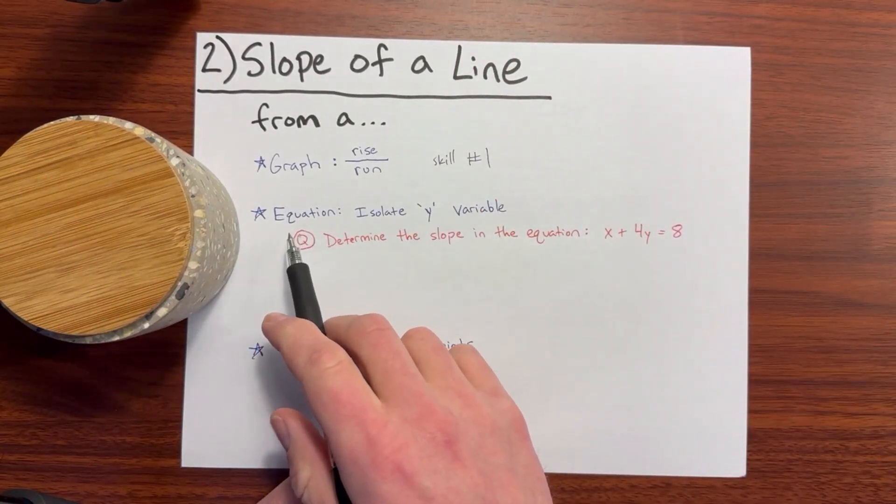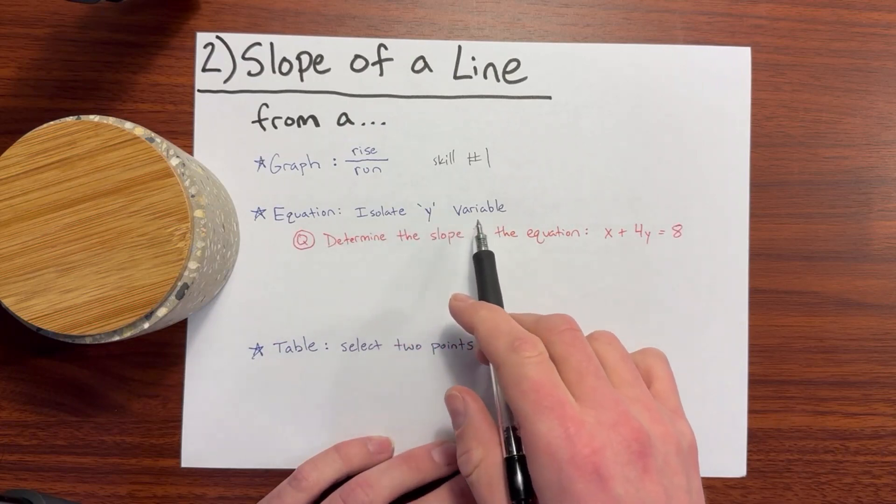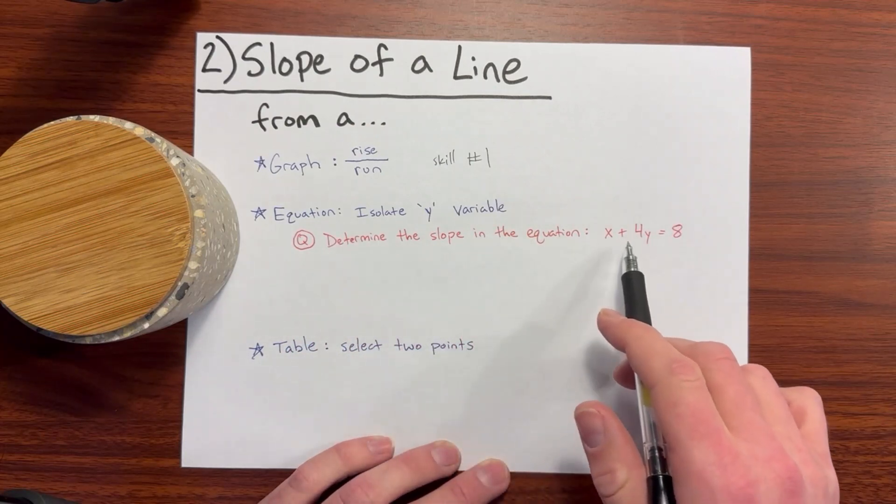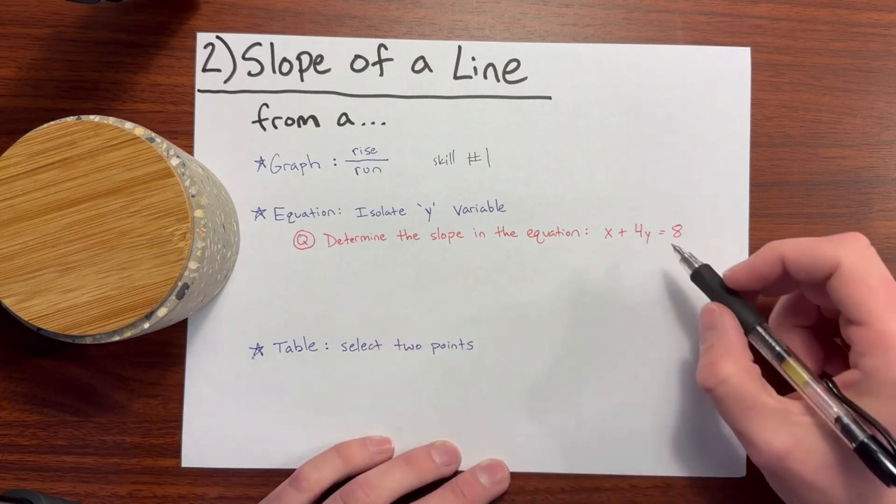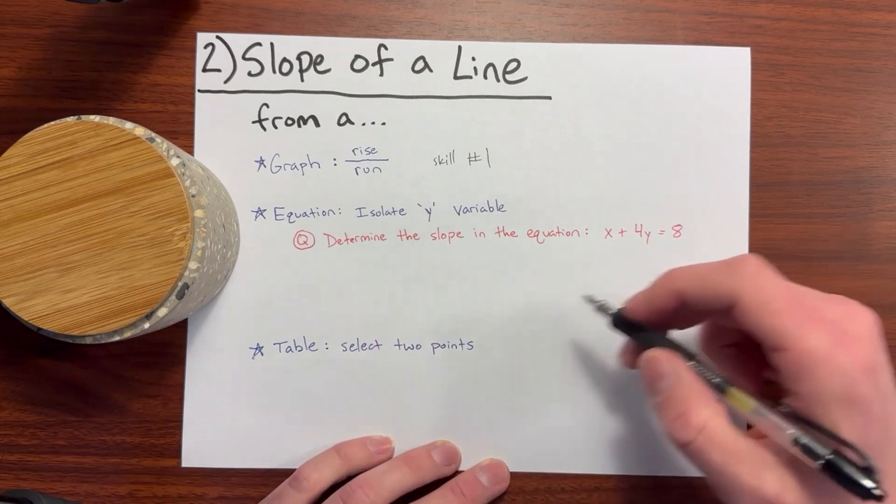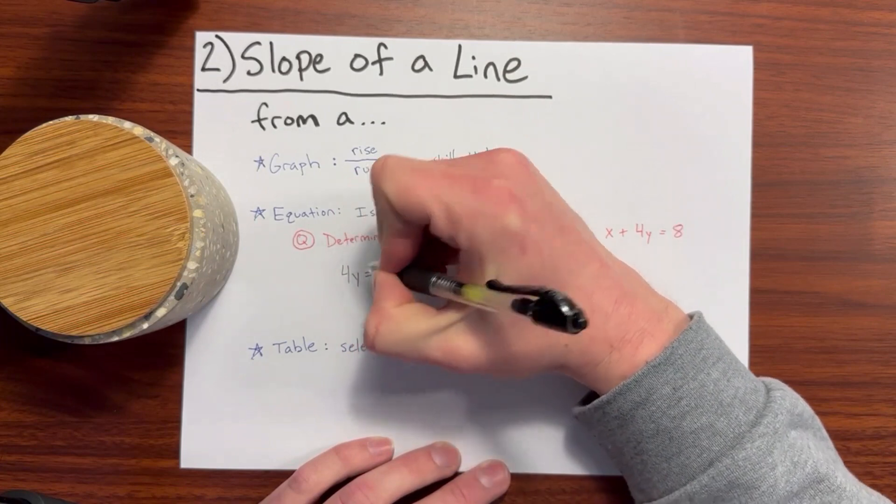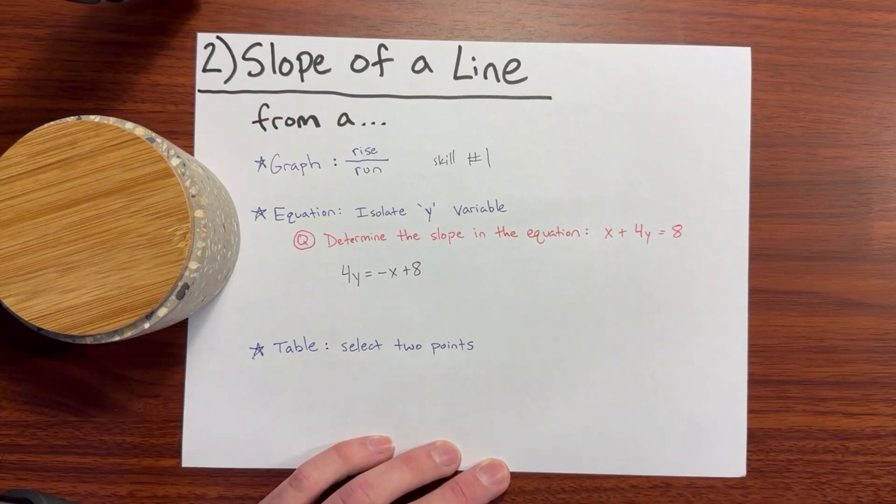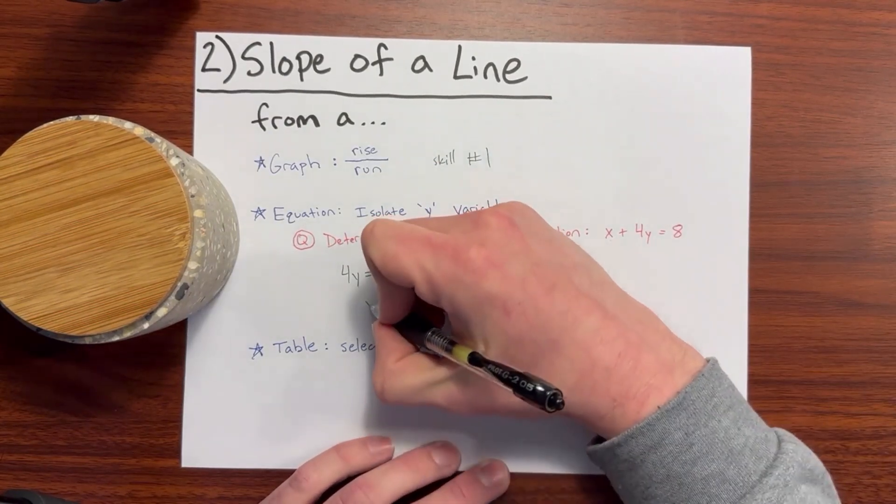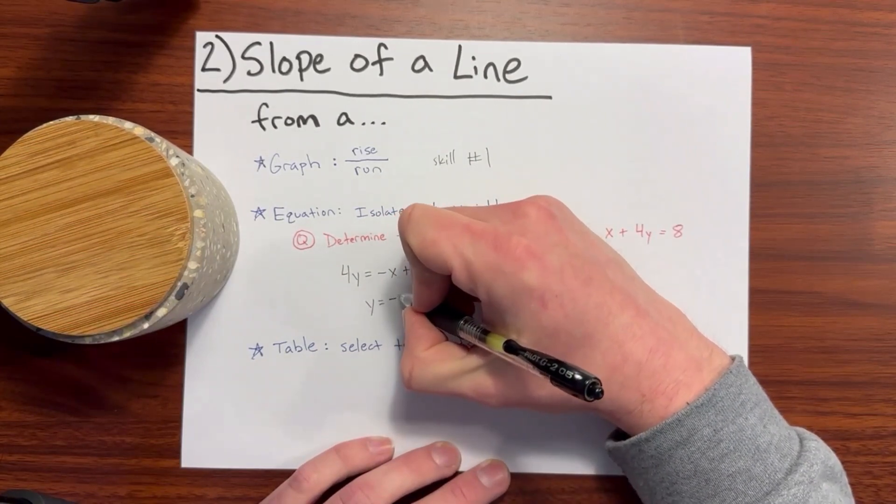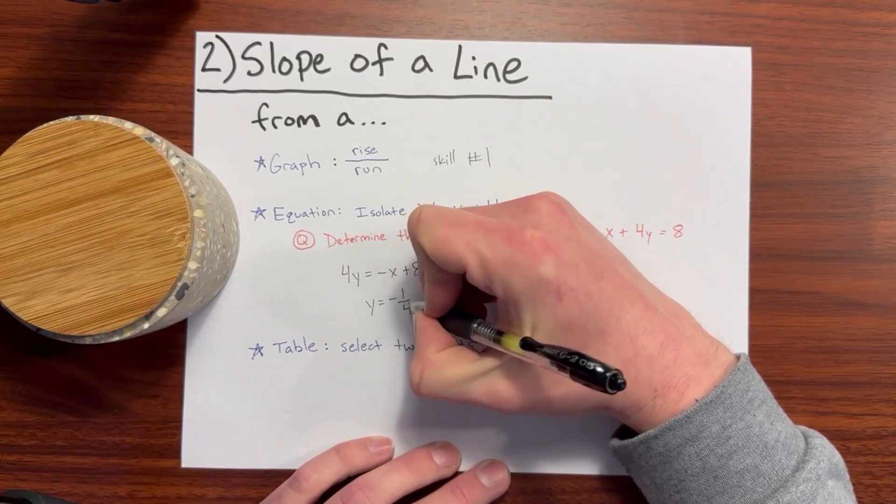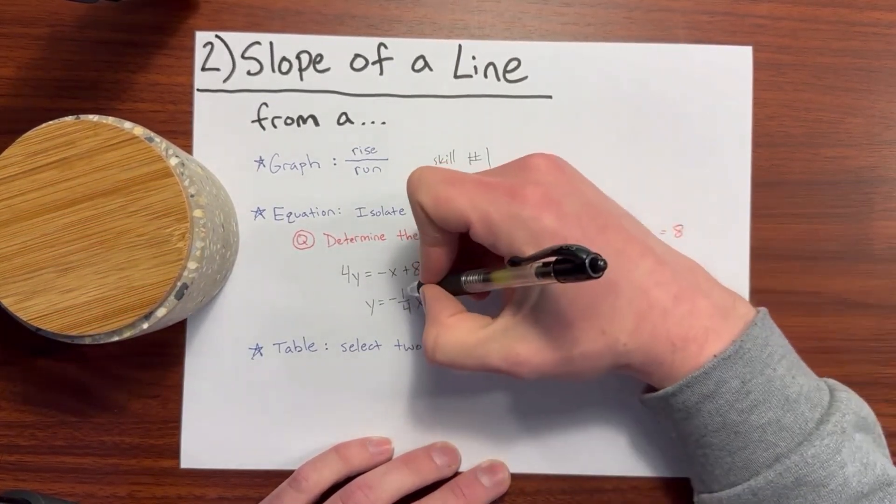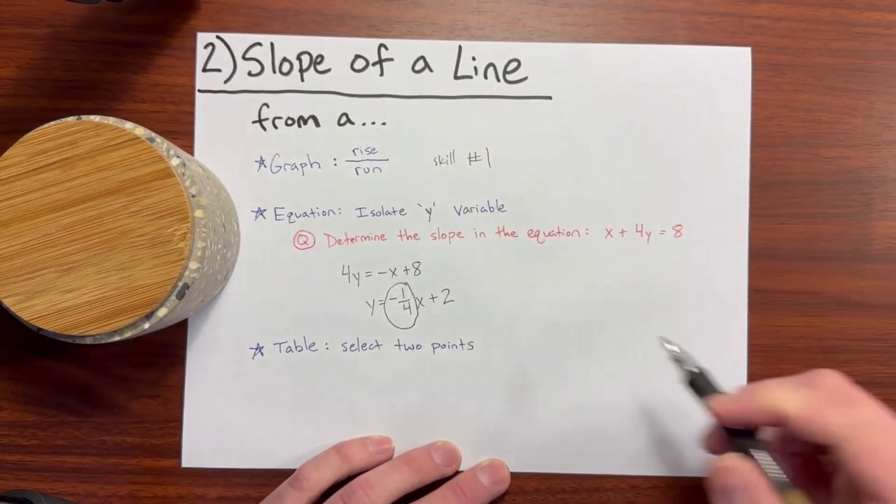Determining the slope of a line from an equation, you'll need to isolate the y variable. So as an example, it asks you to determine the slope in the equation x plus 4y equals 8. So first we will move over the x to the other side, so then we will have 4y equals negative x plus 8. And then we will divide everything by 4 to isolate the y. So we'll have y equals negative 1 fourth x plus 8 divided by 4 is 2. And then the slope, again, it is that negative 1 fourth, so the answer would be negative 1 fourth.